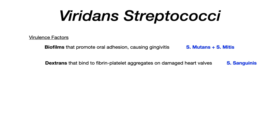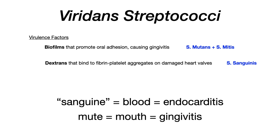This is a really high-yield and complex pathophysiology. The way you remember it: the word sanguine means blood — think blood meaning endocarditis, because there's a lot of blood in the heart. That mnemonic is right out of First Aid. For mutans and mitis, think of mute like mutans — somebody who's mute doesn't use their mouth, and when you think about the mouth, think about dental caries and gingivitis. So: strep mutans and strep mitis have biofilms that cause dental problems; strep sanguinis has dextrans that promote fibrin platelet vegetations binding to damaged heart valves, and oropharyngeal manipulation during a dental procedure can cause subacute bacterial endocarditis.